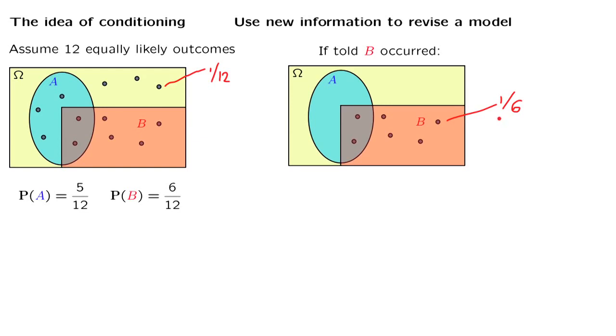And this is our revised model, the conditional probability law. Zero probability to outcomes outside B, and probability 1 over 6 to each one of the outcomes that is inside the event B.